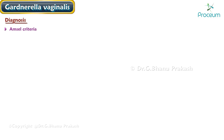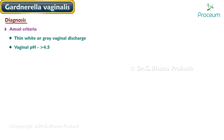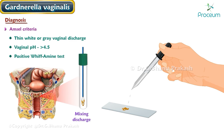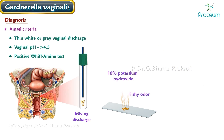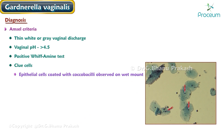The Amsel criteria are used for diagnosis of bacterial vaginosis, and at least three of the following criteria must be present: homogenous, thin, grayish-white discharge that smoothly coats the vaginal walls; vaginal pH greater than 4.5; a positive whiff test — mixing discharge with 10% potassium hydroxide gives off a fishy odor; and clue cells — epithelial cells coated with coccobacilli observed on wet mount.